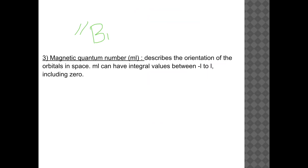In each of our rooms, we have bunk beds. The magnetic quantum number M sub L describes the orientation of the orbitals in space. M sub L can have values from negative L to positive L, including 0.